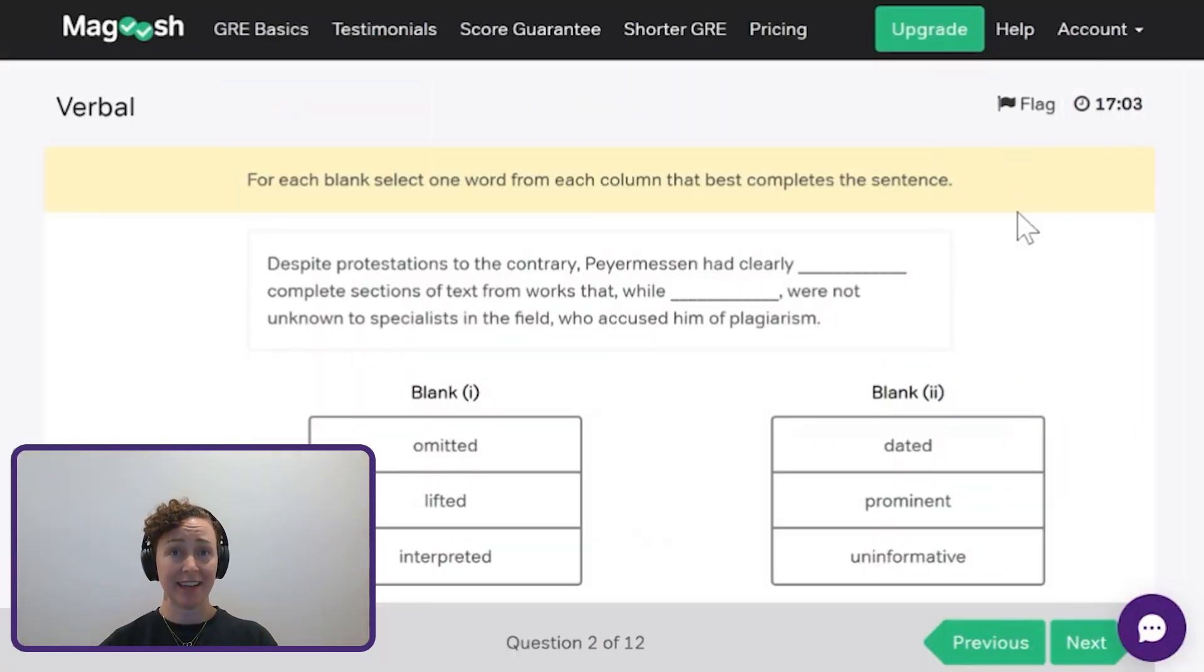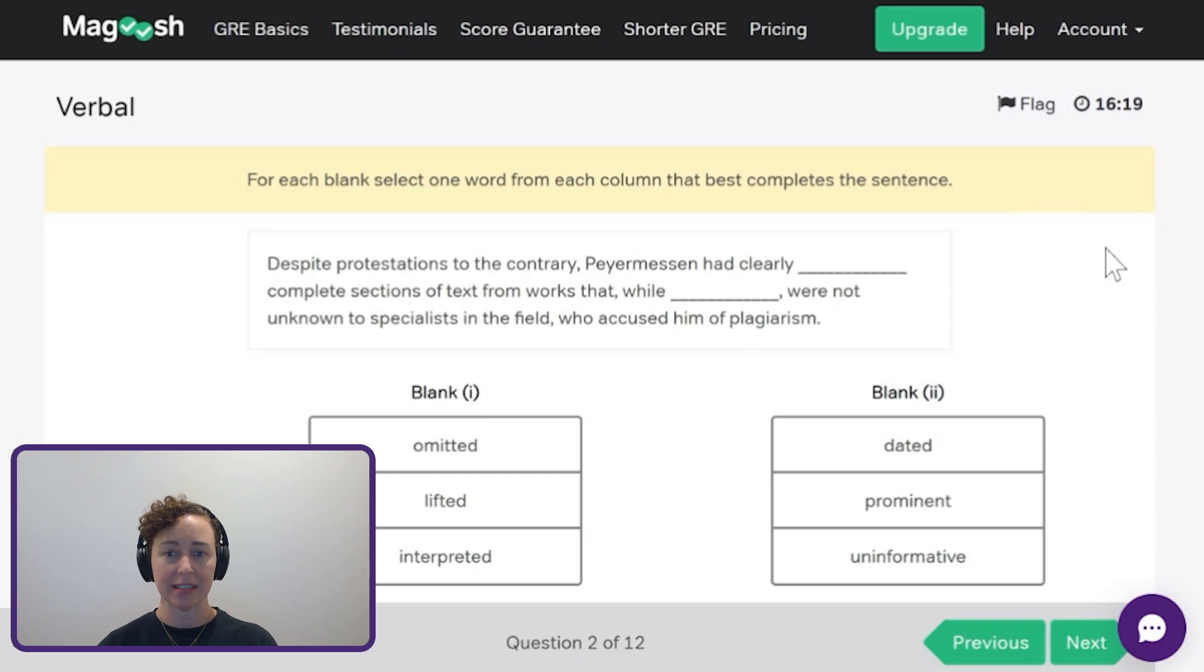Second one, we have a two blank sentence completion. Despite protestations to the contrary, that person had clearly blank complete sections of texts from works that while blank were not unknown to specialists in the field who accused him of plagiarism. So I think the second blank is going to be easier here. The works while not something were not unknown to specialists in the field. So if these works are known by specialists, that indicates that they're probably not known by everybody, not a common piece of knowledge. So it's got to be something like while not well known. If we look over our answer choices, prominent is not like that, uninformative, not like not well known. The closest thing we have is dated because something dated is really old and not a lot of people would know it besides the specialists. I feel good about that.